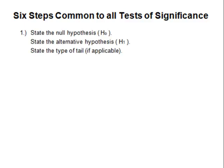Number one: state the null. This is usually the assumed value for the population parameter. It should involve an equal sign. State the alternative. This is normally the claim — what the researcher believes. It should have a greater than sign, a less than sign, or a not equal to sign.